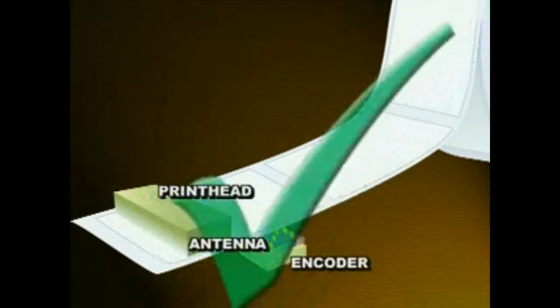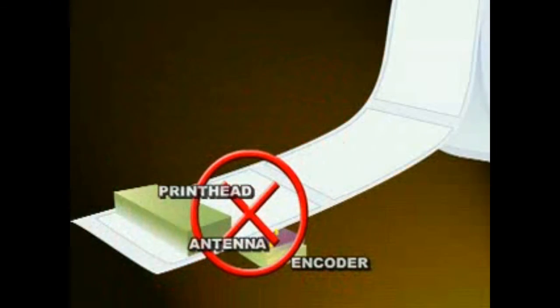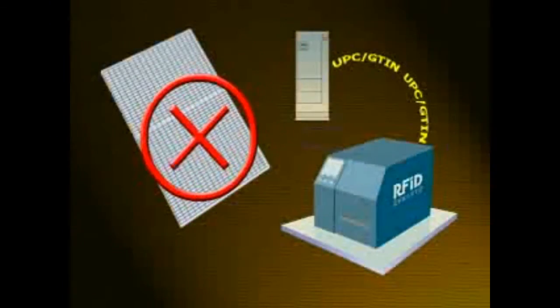If the label is good, it's ready for encoding. If the label doesn't meet the parameters, it's considered bad and is overprinted and voided from the system.